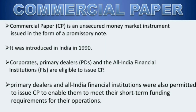What is commercial paper? Commercial paper kya hai? Commercial paper is an unsecured money market instrument issued in the form of promissory note. It is unsecured because it is not usually backed by any form of collateral. Isi liye is ko unsecured kaha jata hai.